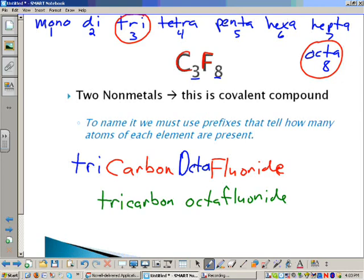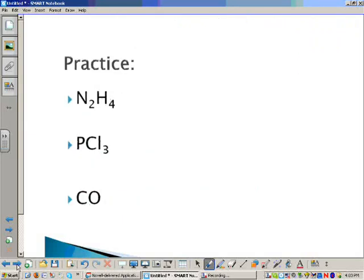The second word in covalent compounds always gets the I-D-E ending. So if the second one was Cl, it would be chloride instead of chlorine. Oxygen would be oxide instead of oxygen.